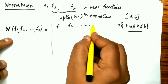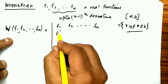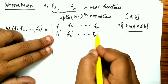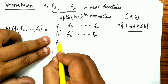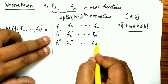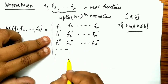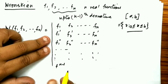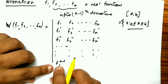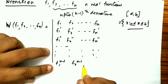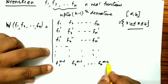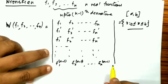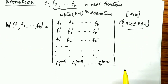The Wronskian W(F1, F2, ..., Fn) is defined as an n×n determinant. The first row is F1, F2, ..., Fn. The second row is F1', F2', ..., Fn' (first derivatives). The third row is F1'', F2'', ..., Fn'' (second derivatives), continuing up to the (n−1)th derivative row: F1^(n−1), F2^(n−1), ..., Fn^(n−1).